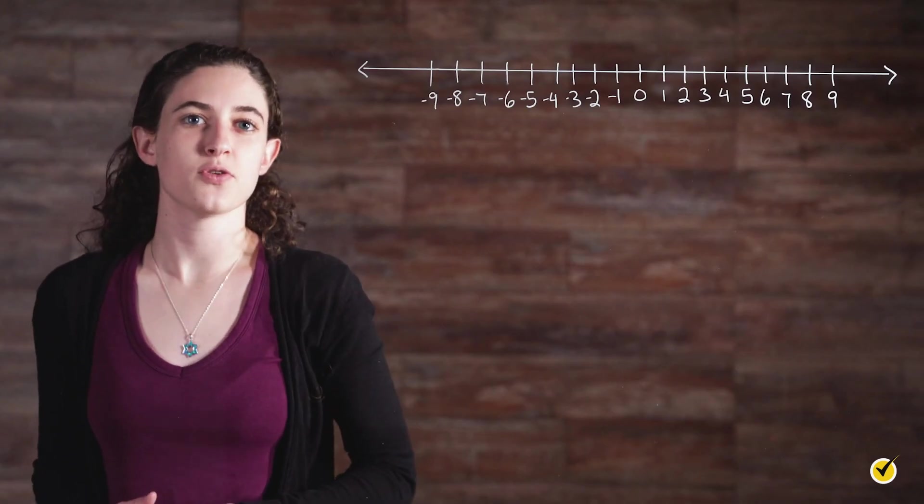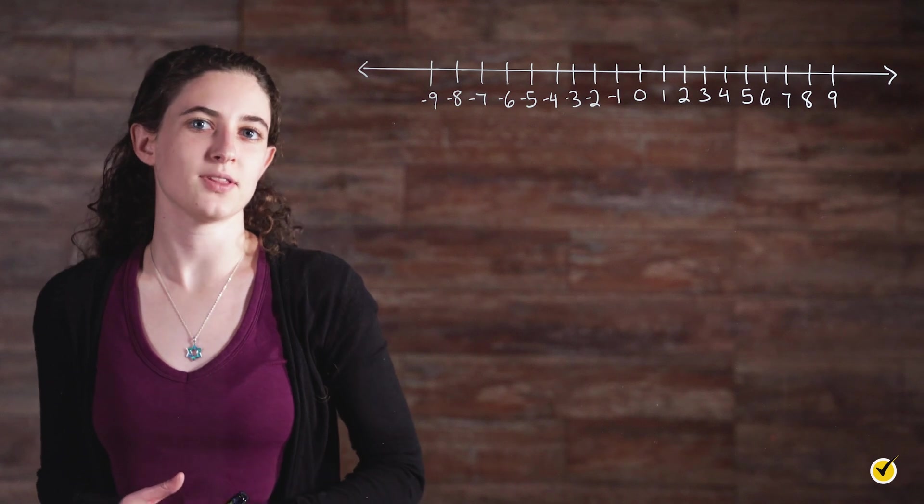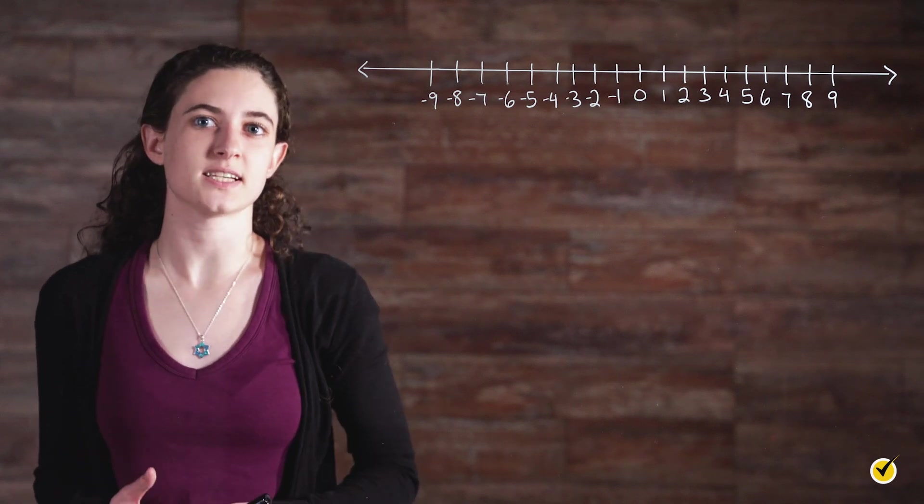The absolute value of a number is its distance from zero on a number line. Let's use the number six as an example.